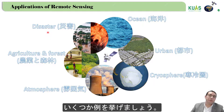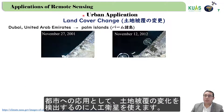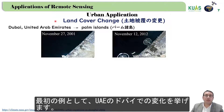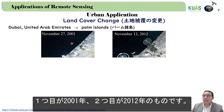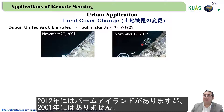Let's consider some examples. For the urban application, we can use satellites to detect land cover change. The first example is Dubai in the United Arab Emirates. We have two satellite images: the first from 2001 and the second from 2012. We can see the Palm Jumeirah in 2012, but it wasn't there in 2001.